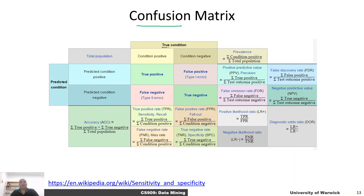Let's say if you've got a true condition — whether someone is positive for a certain condition, let's say cancer — and we've got a certain predicted condition, that is the output of your classifier. If the classifier generates a positive prediction and the true condition is also positive, that is called a true positive. And if a person doesn't have that condition and the classifier also says they don't, that is a true negative.